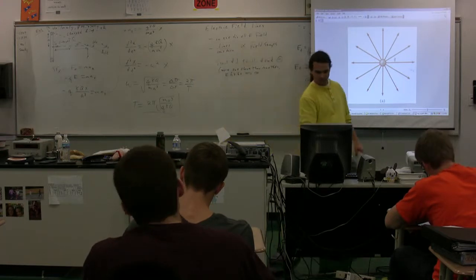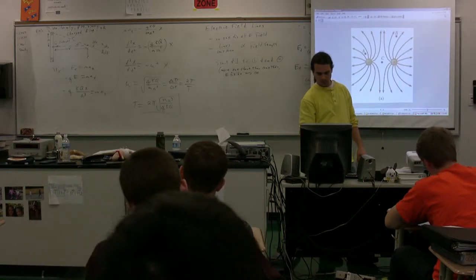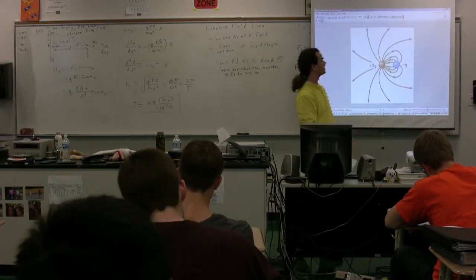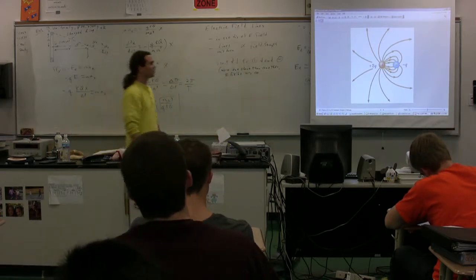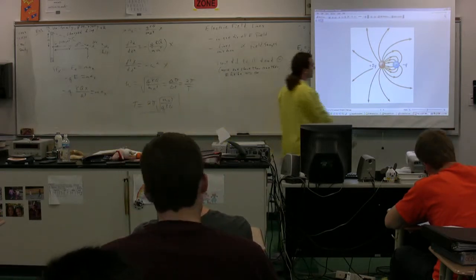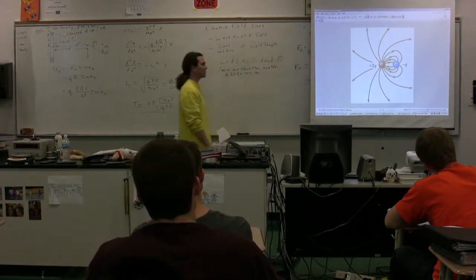For example, if you look at this one. Here we have a positively charged object and a negatively charged object. The one with positive charge has twice the charge. So some of these electric field lines do not end at the negatively charged particle, but rather end at infinity.